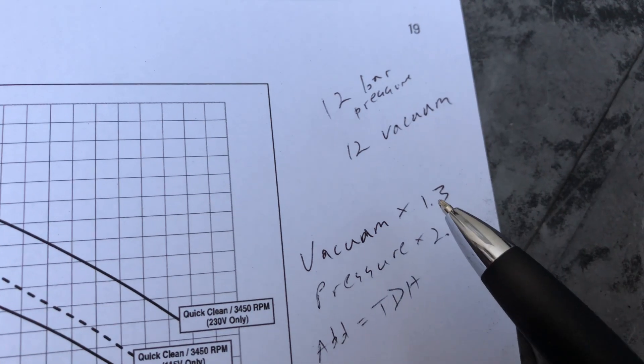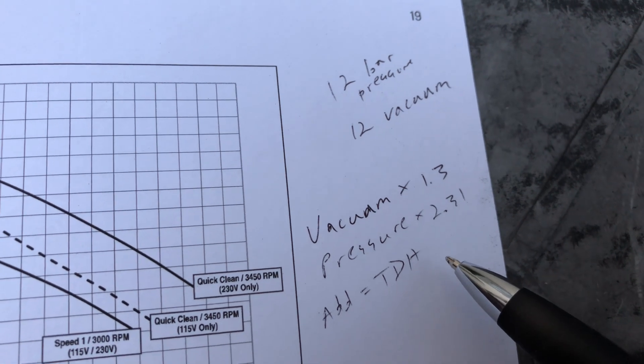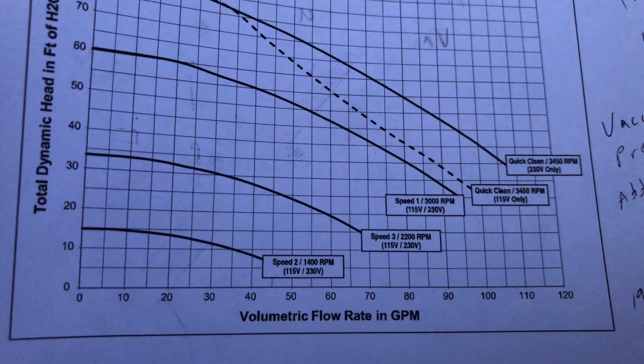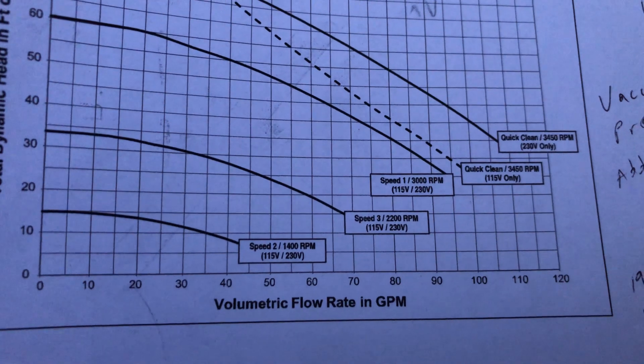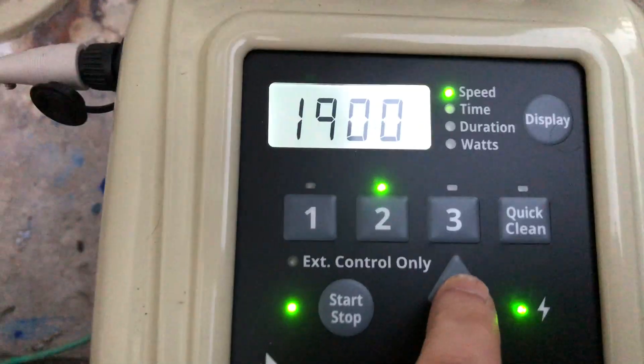So now we're going to take the vacuum number and the pressure number, and we're going to multiply those accordingly, and then add them together, which will get us our total dynamic head. And we got the reading at 3,000, so let's grab what the curve is at 2,200 RPM as well. So let's crank this up a little bit.